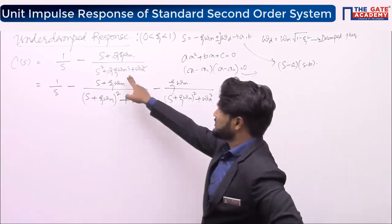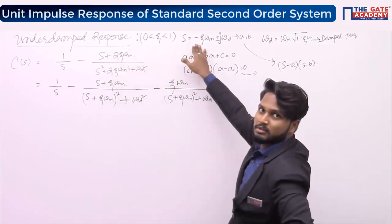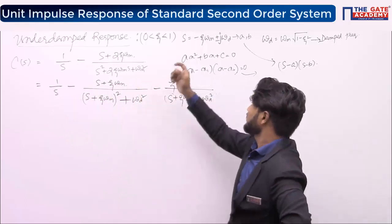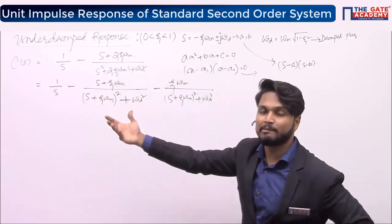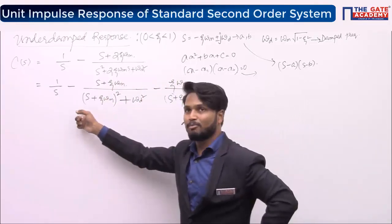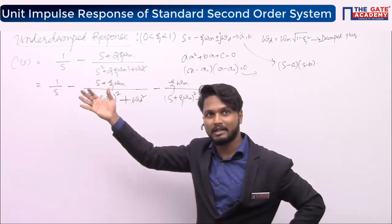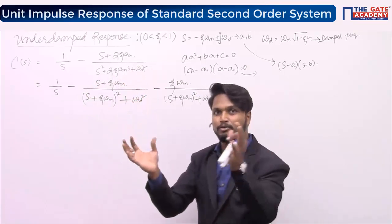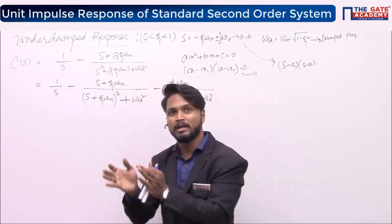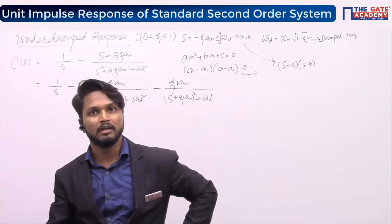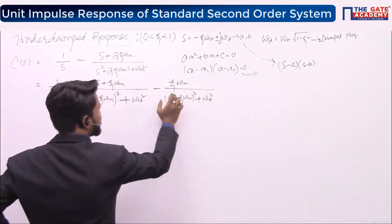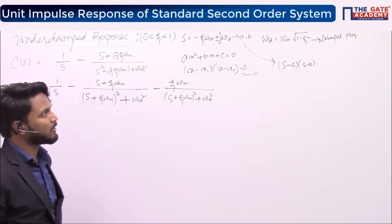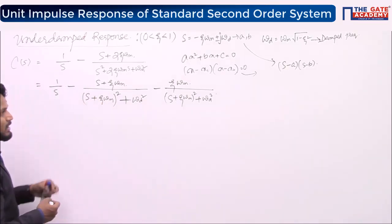I am just writing this quadratic equation into its factorized form using its roots. The two roots are −ζωn + jωd and −ζωn − jωd. Multiplying the factors gives (s + ζωn)² + ωd². So we proceed to the next step. This gives C(s) = 1/s minus (s + ζωn) divided by (s + ζωn)² + ωd².